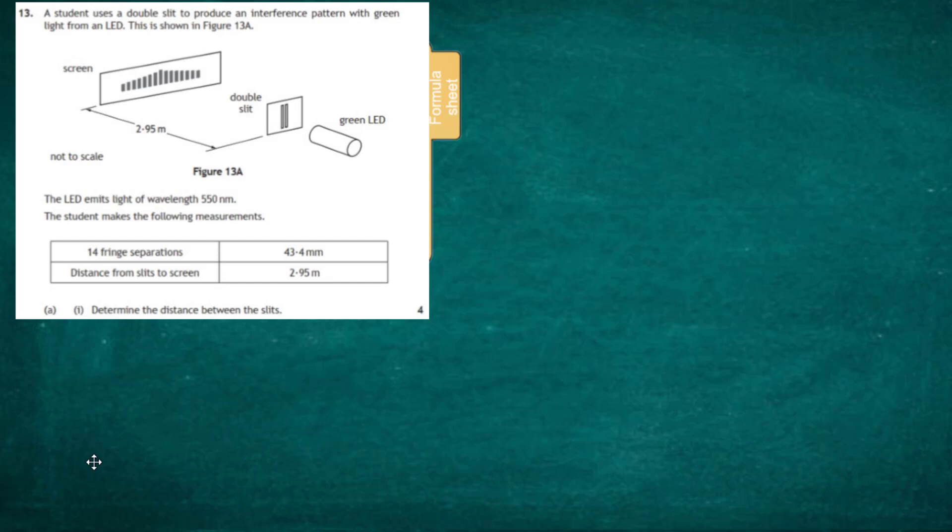The student makes the following measurements: 14 fringe separations is 43.4 millimeters in length, and the distance from the slits to the screen is 2.95 meters. We have to determine the distance between the slits.